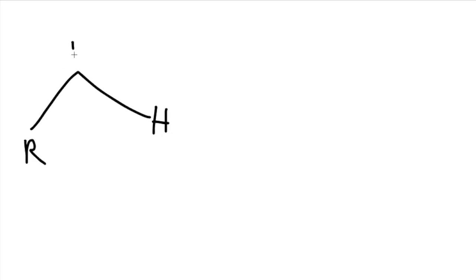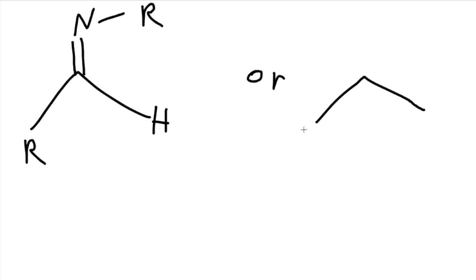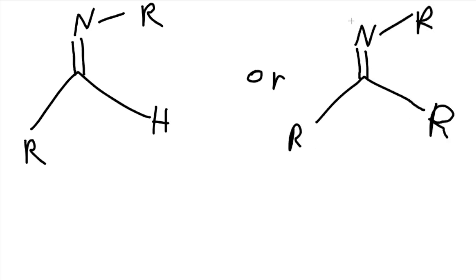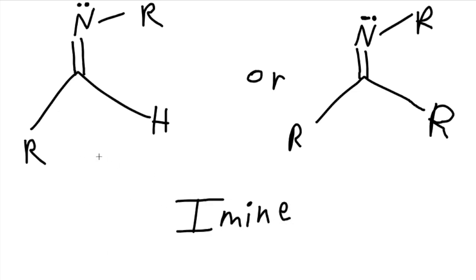For today's video we'll be talking about primary amines. This works for ketones and aldehydes, and what I'm drawing right now is an imine. It works for ketones and aldehydes, and this is called an imine when we do the reaction for a primary amine — so we start with a primary amine and it turns into an imine. This also works for an aldehyde and a ketone.